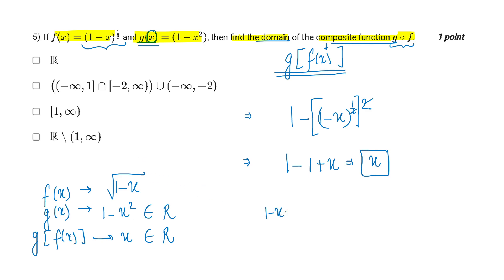Therefore, jab na 1 minus x hai, that should be... basically, it has to be positive. For it, what I have to do is that x has to be less than 1.